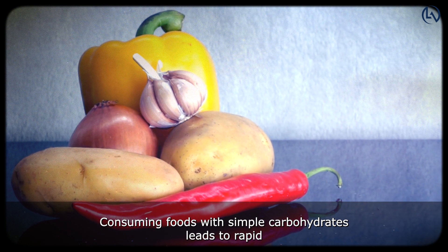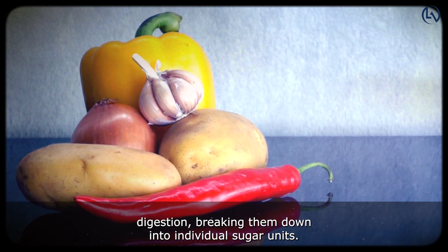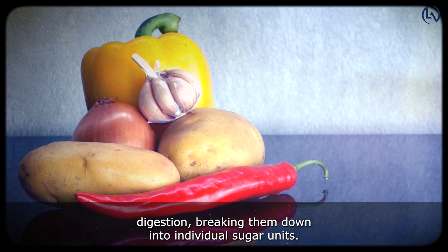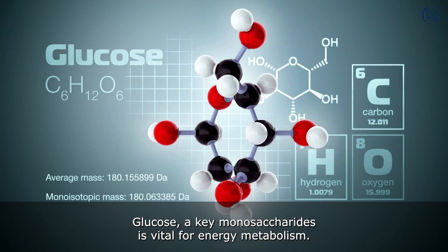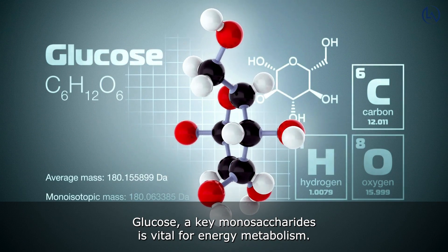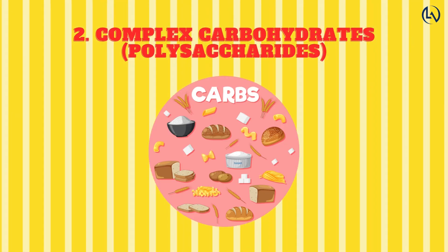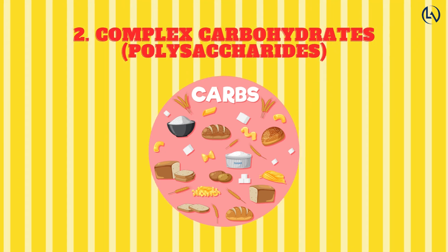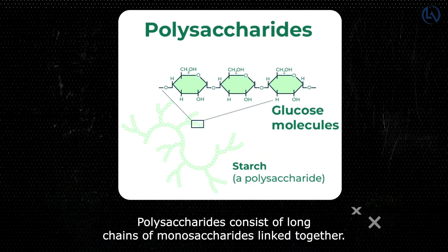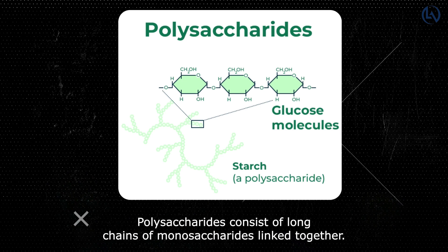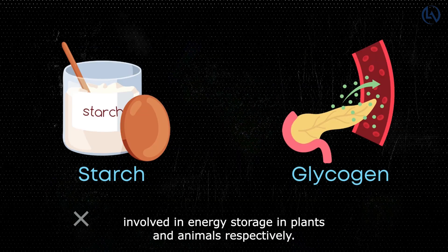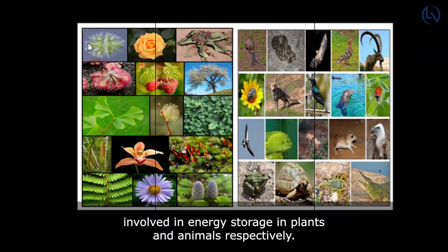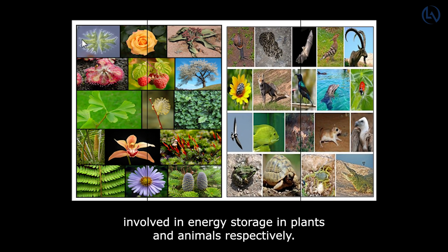Consuming foods with simple carbohydrates leads to rapid digestion, breaking them down into individual sugar units. Glucose, a key monosaccharide, is vital for energy metabolism. Complex carbohydrates, or polysaccharides, consist of long chains of monosaccharides linked together. Starch and glycogen are two important polysaccharides involved in energy storage in plants and animals, respectively.